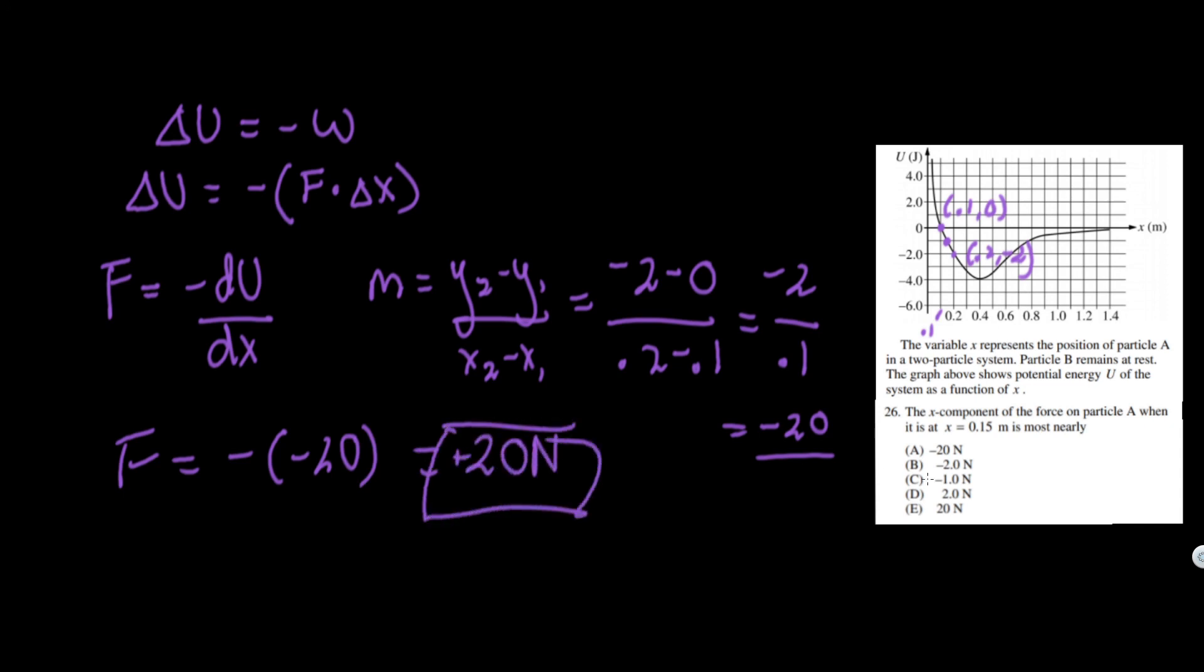A lot of kids make this mistake where they say, oh wait, since I got negative 20, it's already the answer. Don't do that. You got to finish the problem. Remember what you're solving for and use their logic. Essentially, we just took the slope, made the negative. There we go. That's our answer.